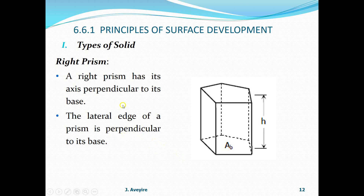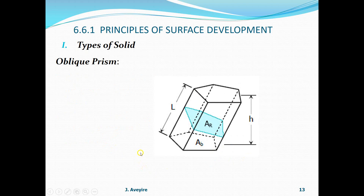Right prism - a prism has its axis perpendicular to its base. The lateral edge of the prism is perpendicular to its base. Now take a look at an oblique prism - the lateral edge is not perpendicular to the base, so it is an oblique prism.